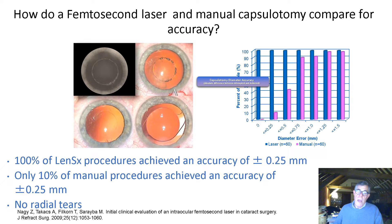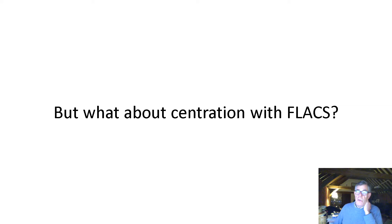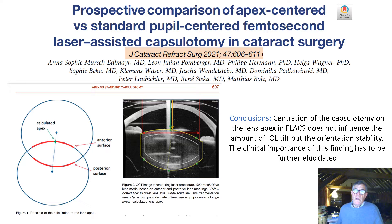Naeser, in one of his original studies, showed that the circularity was certainly better than the manual capsulotomy. Looking at a study comparing prospective apex-centered versus standard pupil-centered femtosecond laser capsulotomy in cataract surgery, their conclusion was that centration on the lens apex didn't influence the amount of IOL tilt, but it was important for stability of the orientation of the lens.